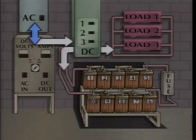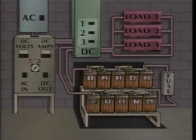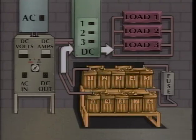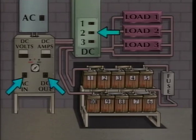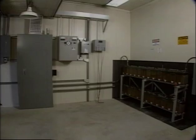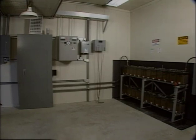If something should happen to interrupt alternating current input to the charger or direct current output from the charger, the battery would immediately supply all of the direct current to the DC loads. The breakers in a DC control system are operated in a specific sequence when a battery charger or a battery is replaced. Because DC control systems can vary, it's important to become familiar with your company's DC systems and how they work.